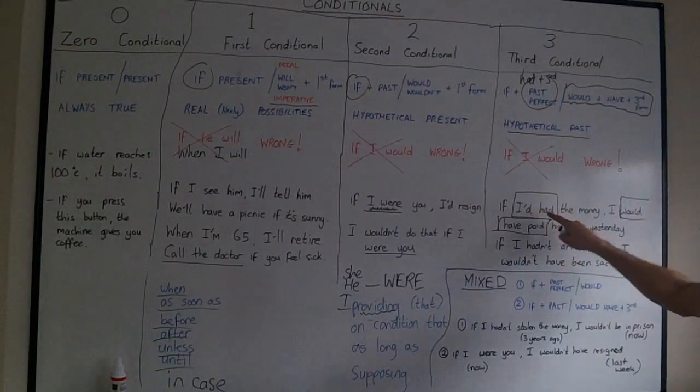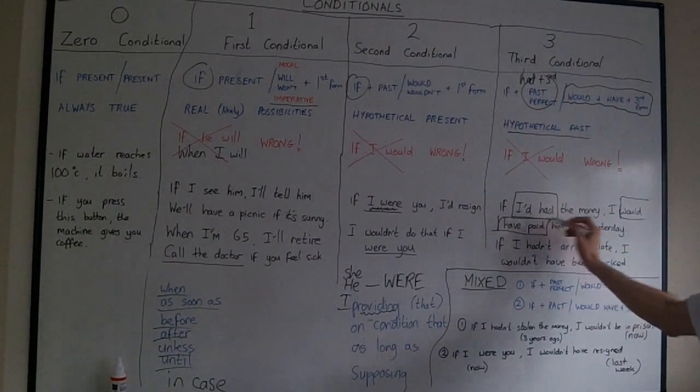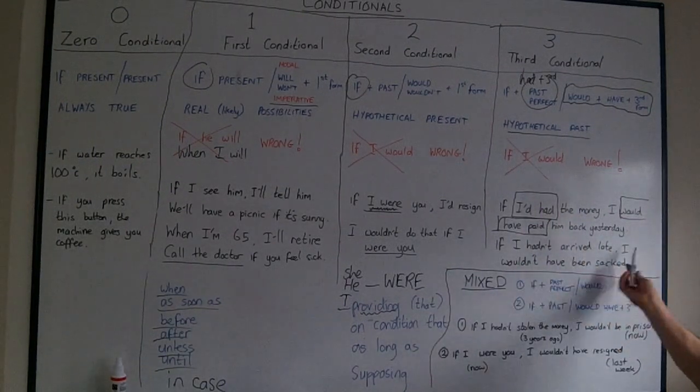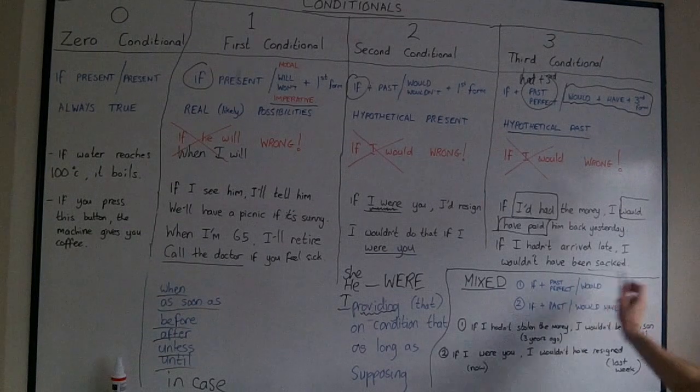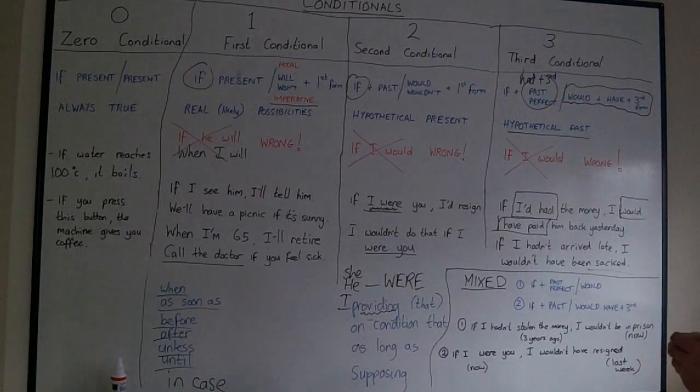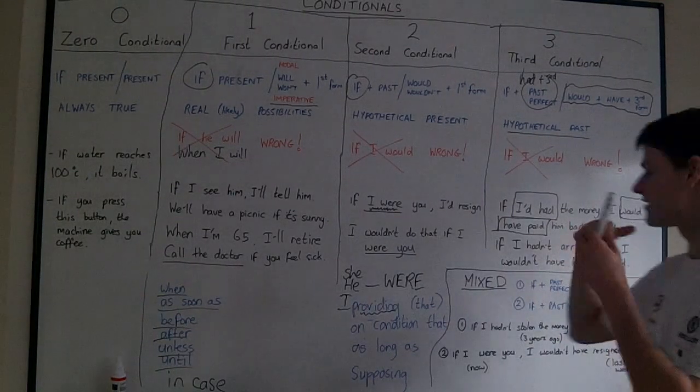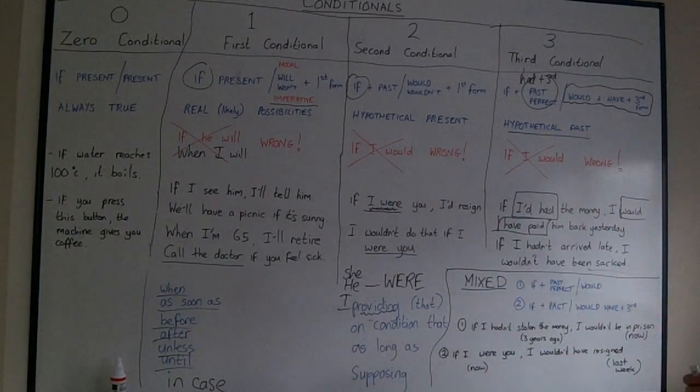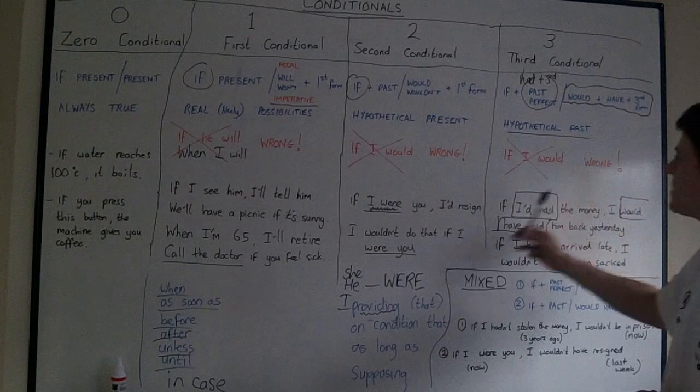So if I had had, this is I'd had. If I had had the money, I would have paid him back yesterday. If I hadn't arrived late, I wouldn't have been sacked. I hope you remember some of this vocabulary. So if I hadn't arrived late yesterday, I wouldn't have been sacked yesterday. So if this is about hypothetical past, this is about hypothetical present.